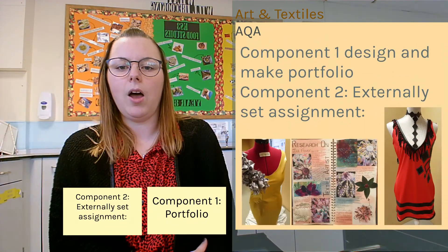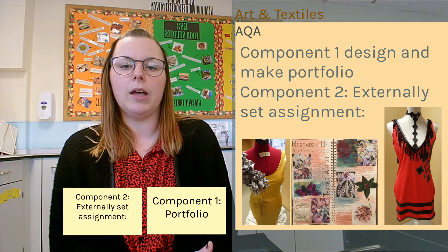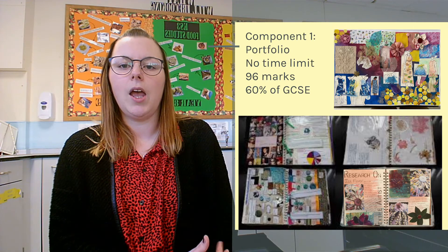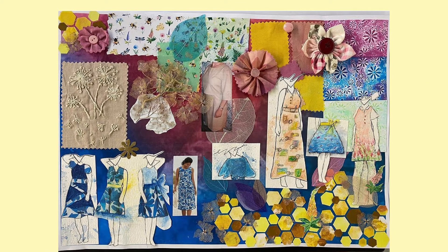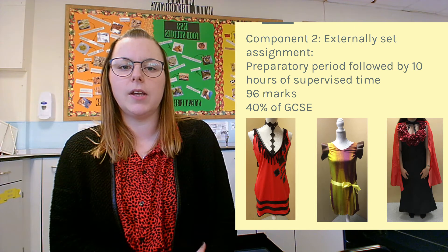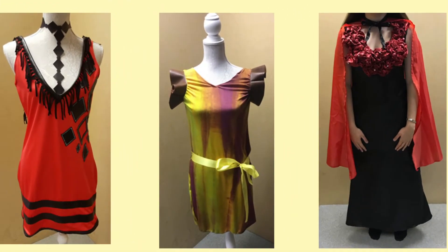We then move on to Art Textiles, which again is split into two components. Component 1 is design and make a portfolio, and Component 2 is an externally set assignment. Component 1 is 60% of the GCSE and uses the exam board AQA. One of our pieces of work involves research and design — you look at different fabrics, different ways of creating design work, putting media onto paper or computer-aided design, and looking at different artists to be inspired by. In Component 2, the externally set assignment, you'll be given a 10 hour supervised exam worth 40% of your GCSE, in which garments are made suitable to be worn to a set brief.